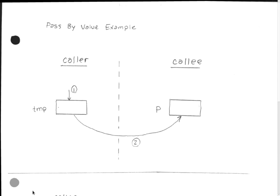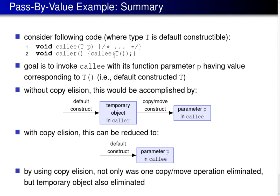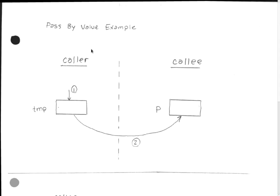Without copy elision, when the caller calls the callee, the first thing it has to do is generate the argument — create a default constructed T. Without elision, we create a local variable in the caller holding the default constructed T, and then because the called function doesn't see that local variable, we have to propagate its value into the formal parameter P — a copy or move from the temporary into P.